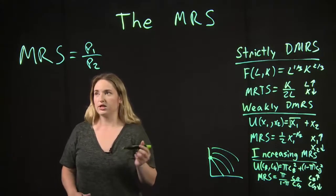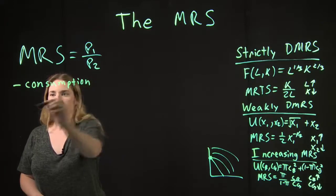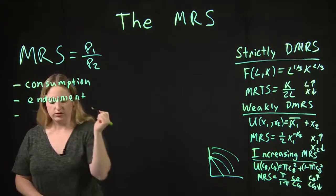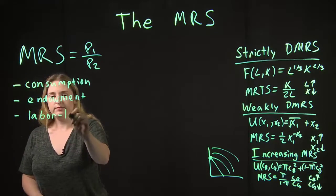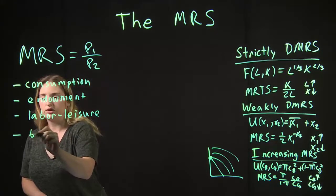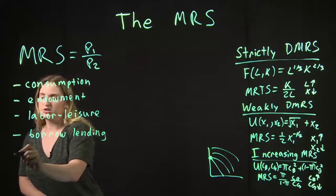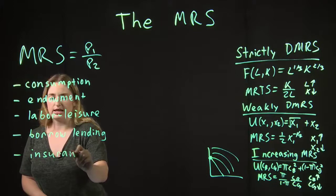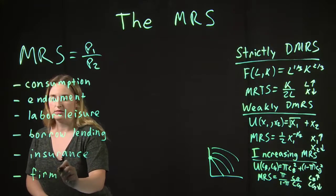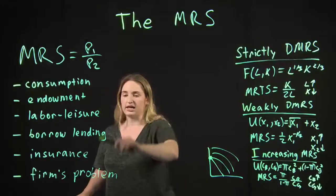So like I said before, there were a lot of problems that we've looked at this quarter. So we've had consumption goods, x1, x2 for example. We've had an endowment economy which would change our budget. We've also had the labor-leisure choice where we decided how much we would want to work and how much time we'd want to spend in recreation. We've also looked at borrowing and lending with and without inflation. We've had insurance problems where we want to decide how much is the optimal amount of insurance to purchase. And just recently we've been working on the firm's problem. So this tool we've been working with, setting the marginal rate of substitution equal to a price ratio, can apply in all of these situations.